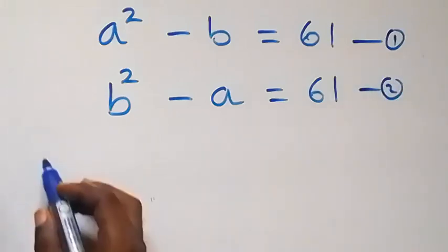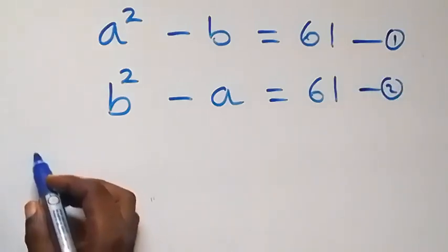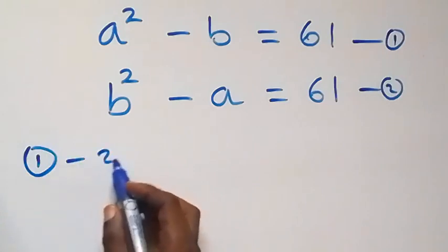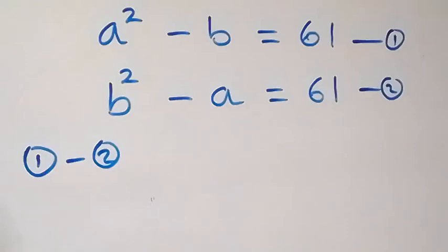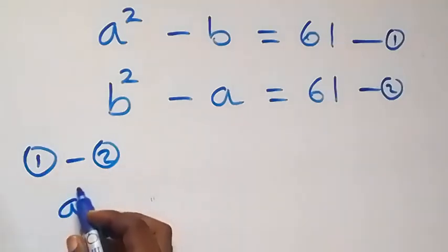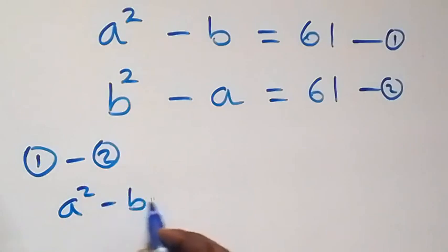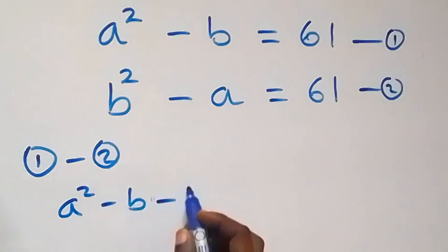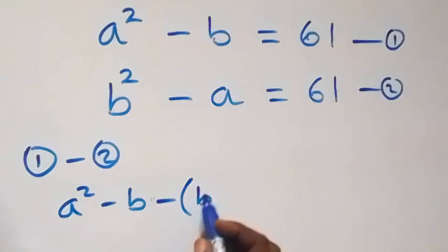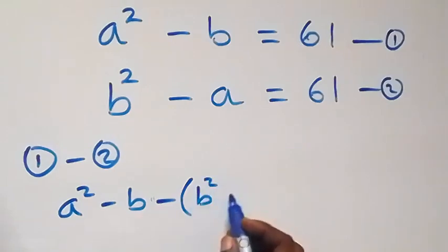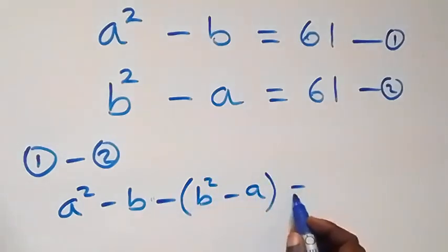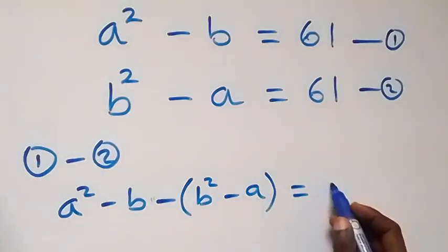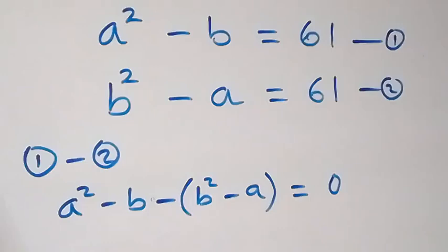From here, let's subtract equation 2 from equation 1. So equation 1 minus equation 2. On the left-hand side we have A squared minus B, then minus B squared minus A. Now equals to 61 minus 61, which will be 0.